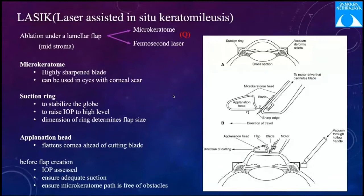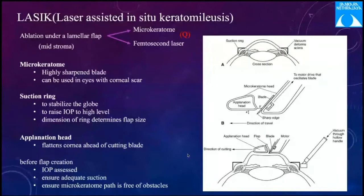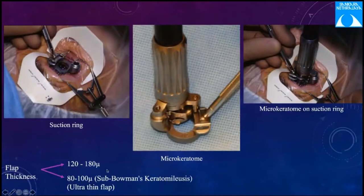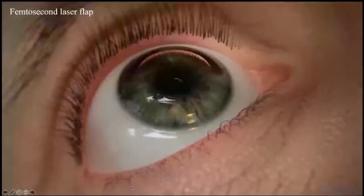The microkeratome path must be free of obstacles. Flap thickness options are standard 120–180 microns, or ultra-thin 80–100 microns (sub-Bowman's keratomileusis). For the femtosecond laser, the suction cup is applied via foot pedal, followed by the applanation cone. An intrastromal vent incision allows gas bubbles to escape, and photo-disruption creates the flap. After femtolasic application, only one-third of the flap should be dissected at a time to decrease the risk of tearing.